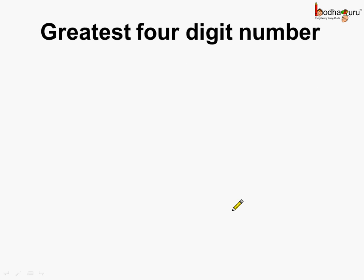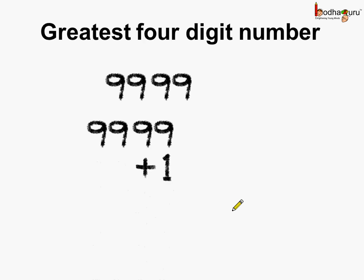Continuing — which is the greatest 4-digit number? It has to be 9, 9, 9, 9 — four times 9 written. Now add 1 to it. What do we get? We get 9 plus 1...